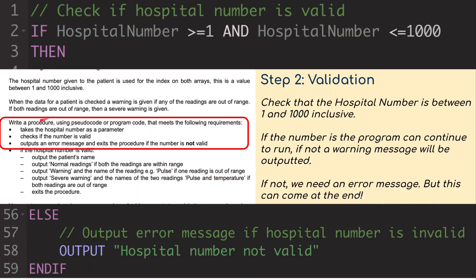Step one, the actual procedure itself: write a procedure using pseudocode that takes the hospital number as a parameter. If the hospital number is greater than or equal to one and less than or equal to a thousand, then we're going to do all this here. We're checking validation: is the number between these two values? If it isn't, at the bottom of the code I'm going to say else, output the hospital number is not valid. Then I'm going to do a nested if inside for all my outputs.